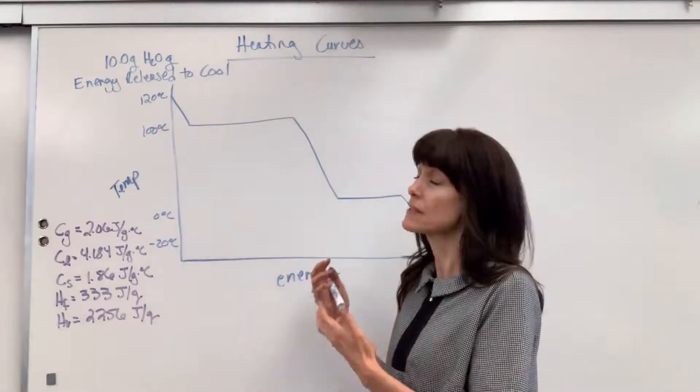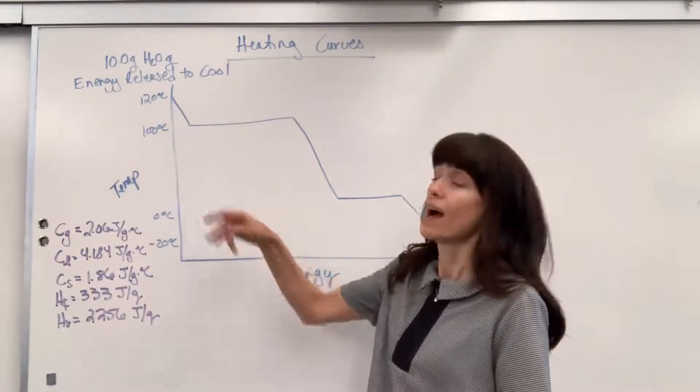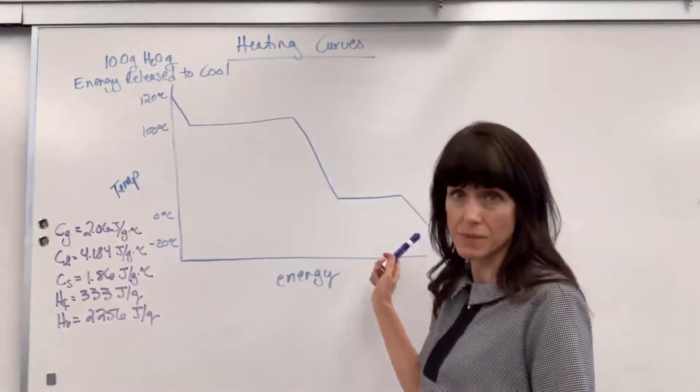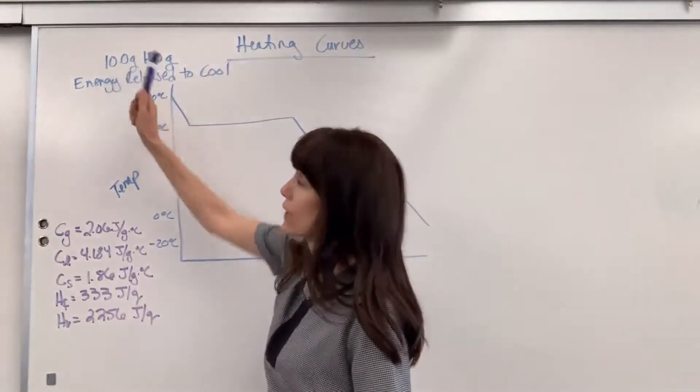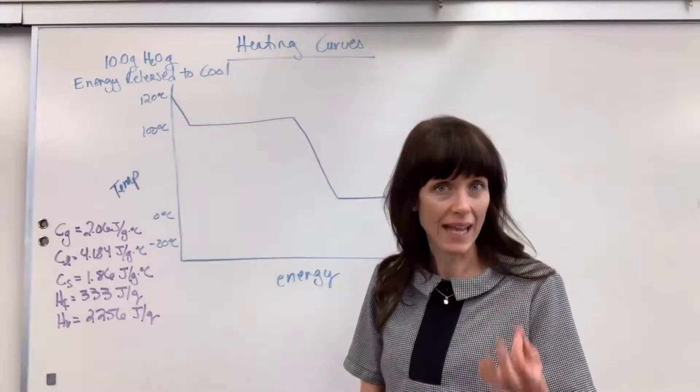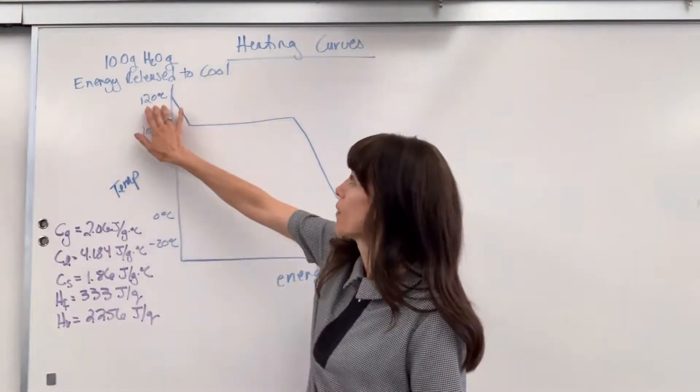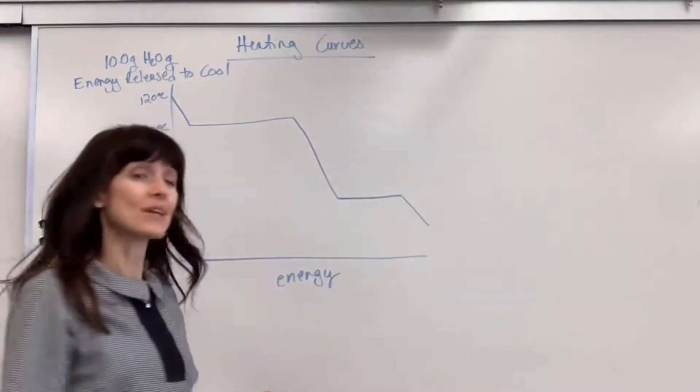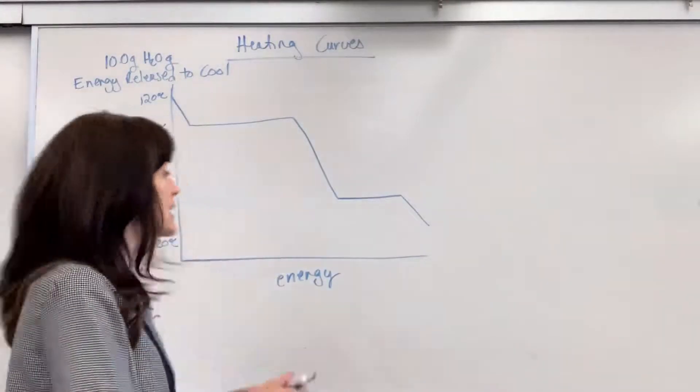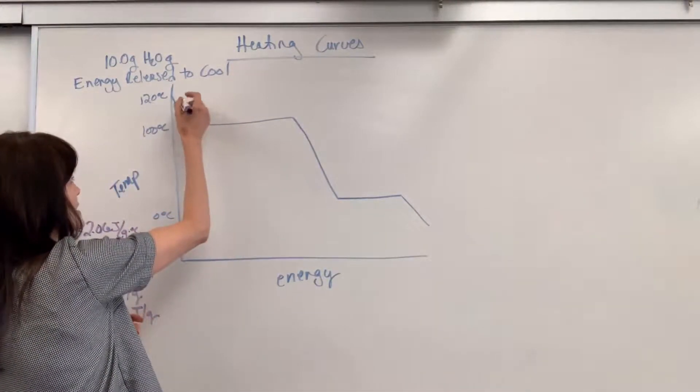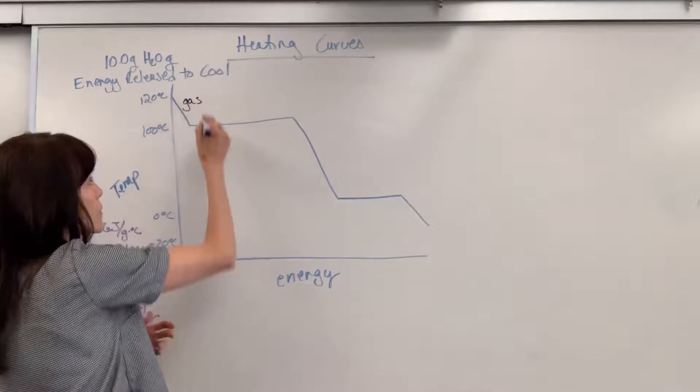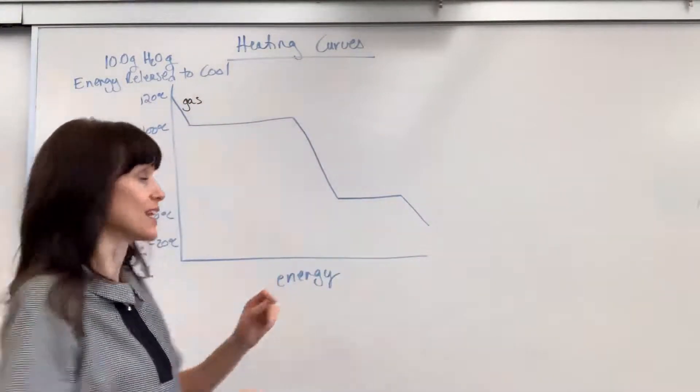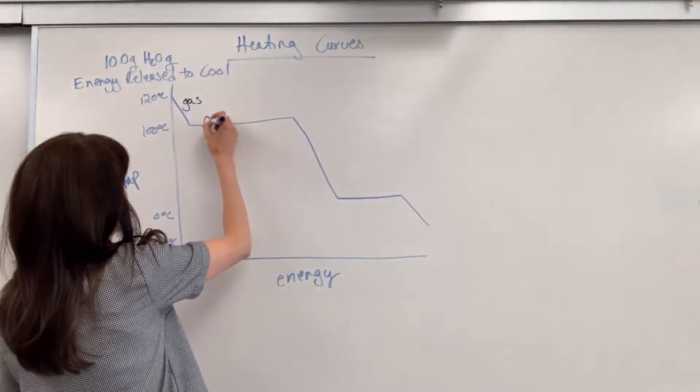In this particular example, I've graphically displayed how we cool a substance. We're starting with 10 grams of water in its gas form all the way at 120 degrees. We're going to cool this, and I'm going to begin labeling as I'm explaining. This first that you see is the gas phase. We're going to cool this gas, and then right here is going to be your evaporation condensation line. So we are going to condense.